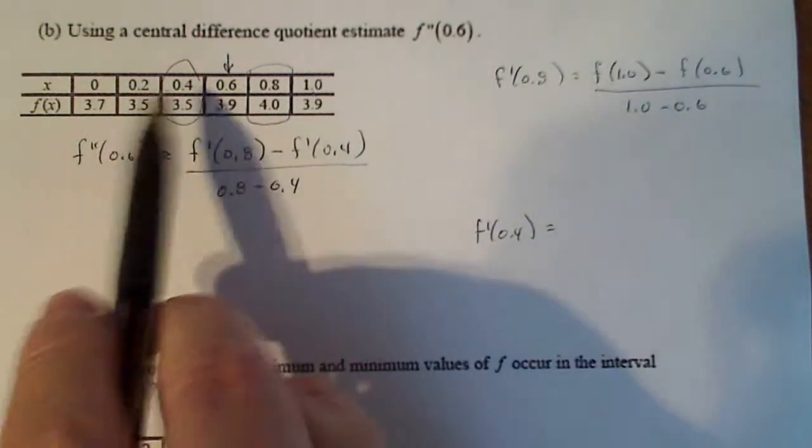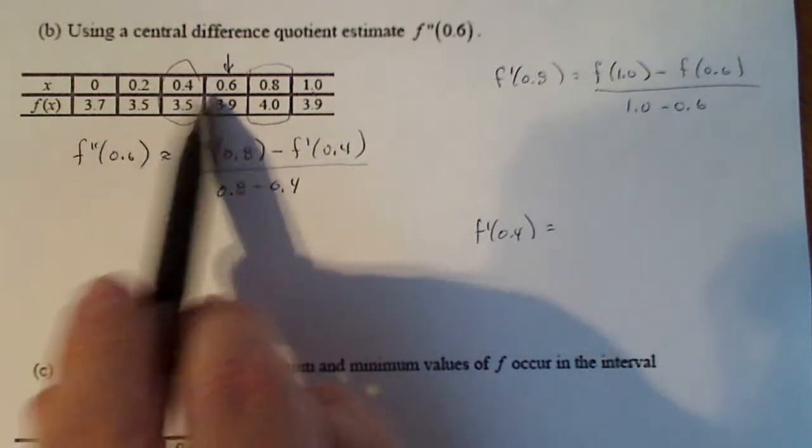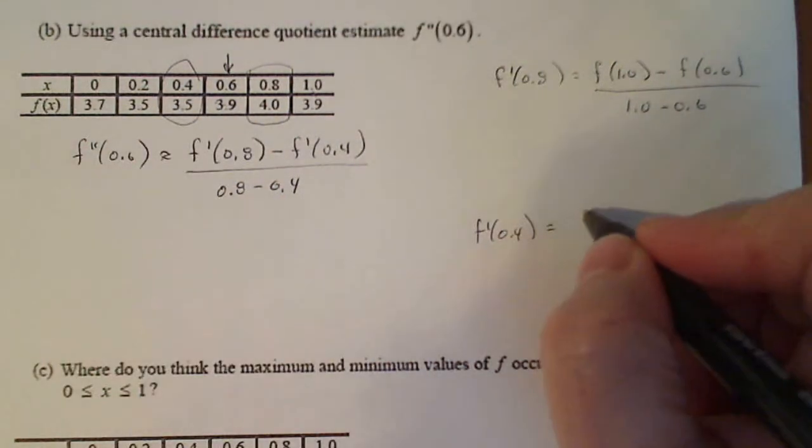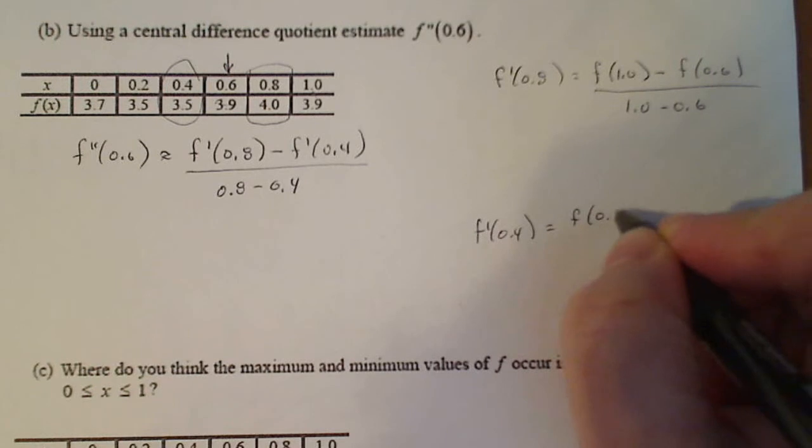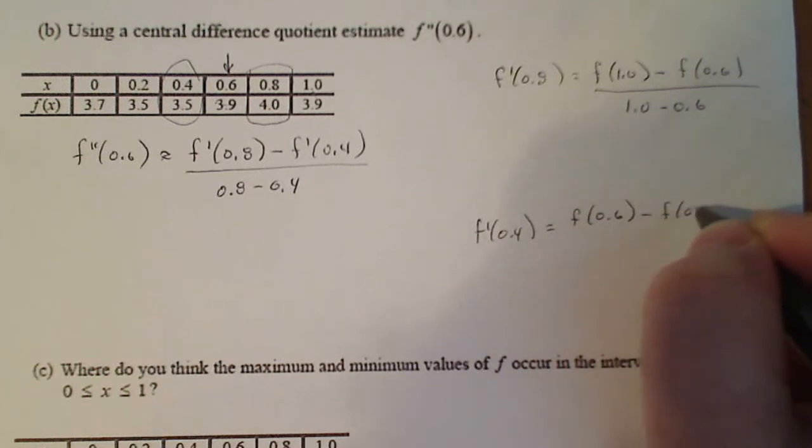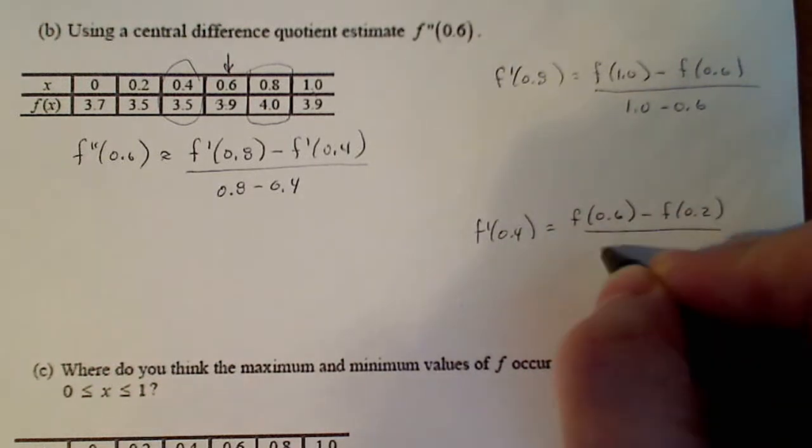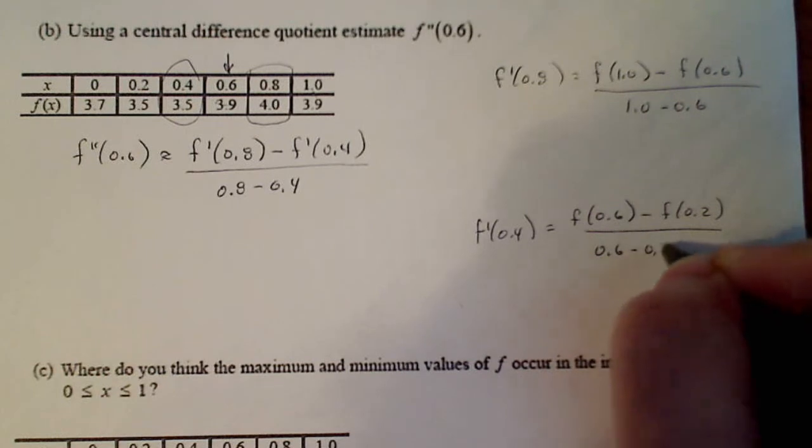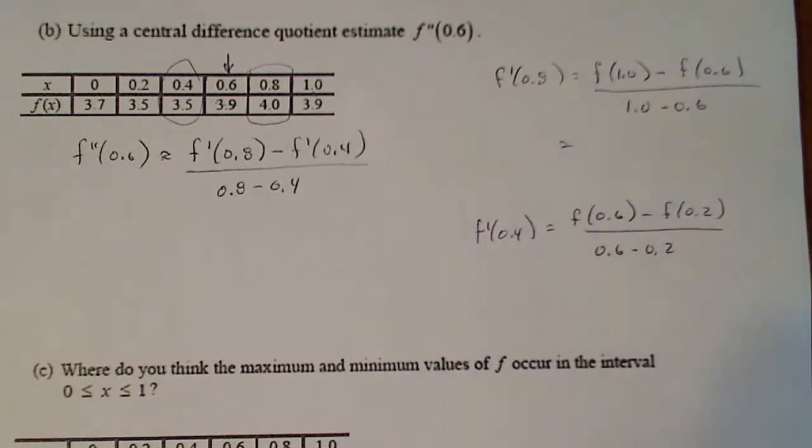And here, the two numbers that surround 0.4, I have f of 0.6 minus f of 0.2 divided by 0.6 minus 0.2. So let's finish these numbers off.